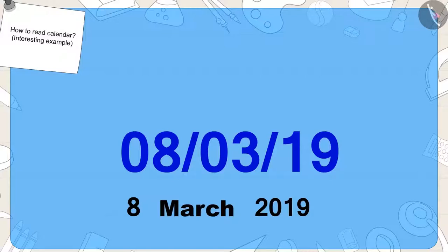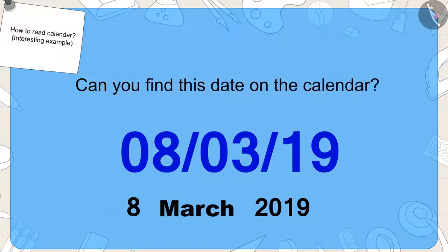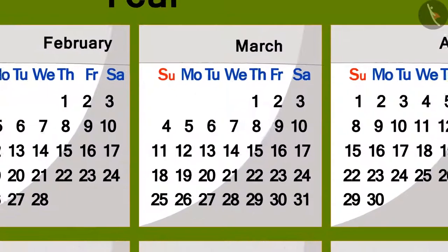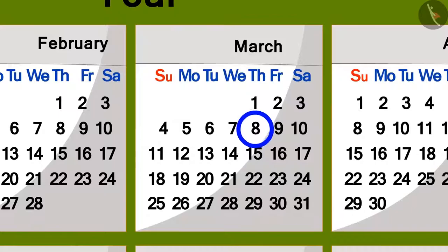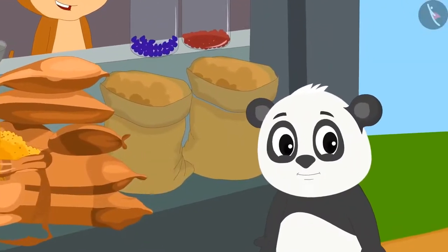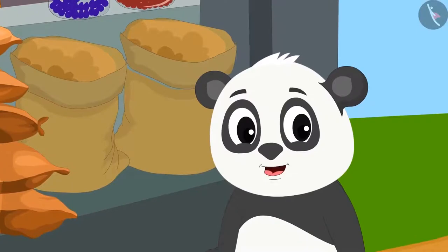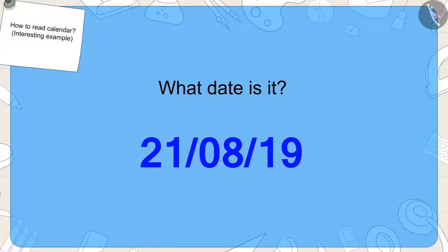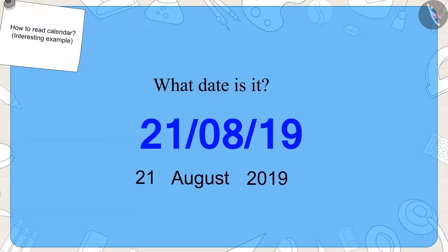Kids, can you find this date on the calendar? If you want, you can pause the video and find the answer. Well done, kids — you have found the right answer. Golu became very excited after learning how to write the date. When Golu reached school, he saw that the date was also written on his classroom's blackboard. Children, can you tell me what date it is? Exactly — this date is 21st August, 2019.